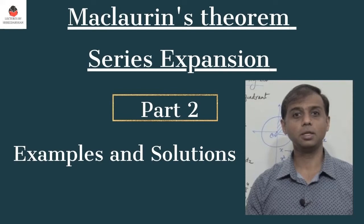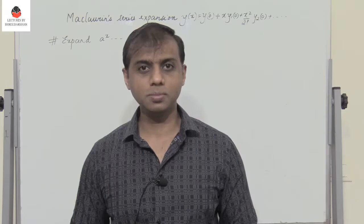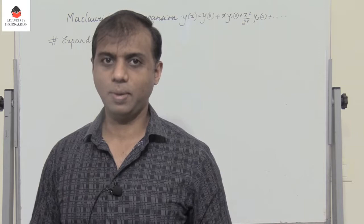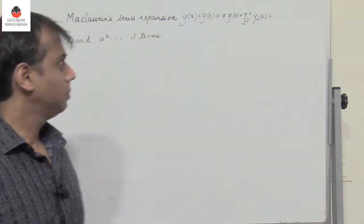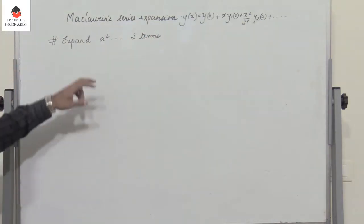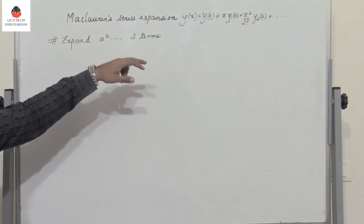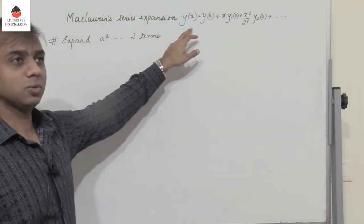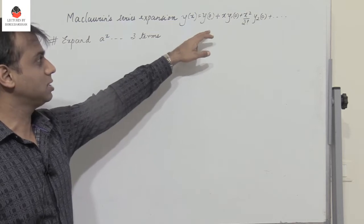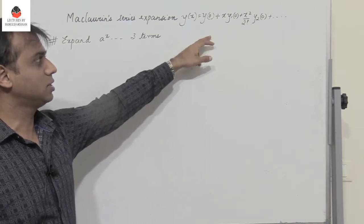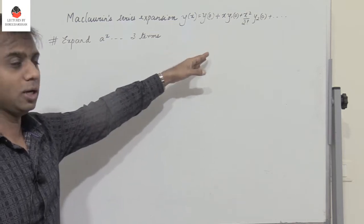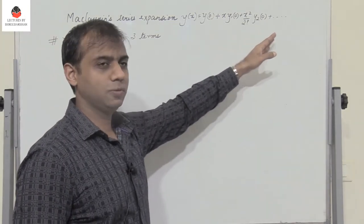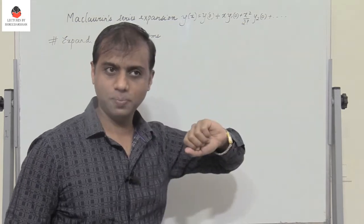Hello students. We shall continue solving problems related to Maclaurin series expansion. The Maclaurin series expansion is given by y(x) = y(0) + x·y₁(0) + (x²/2!)·y₂(0) and so on.